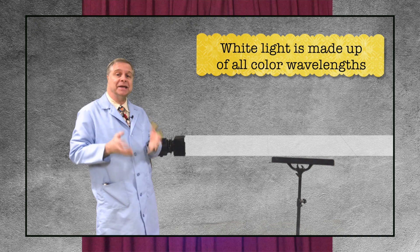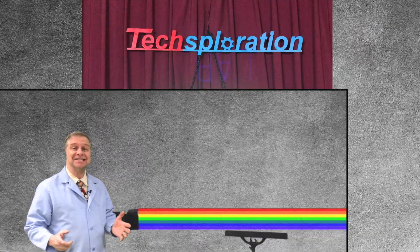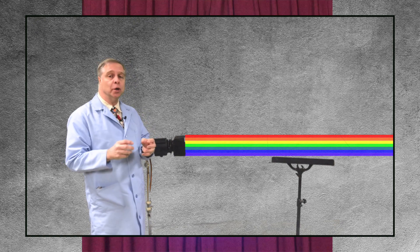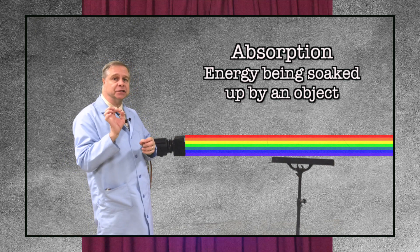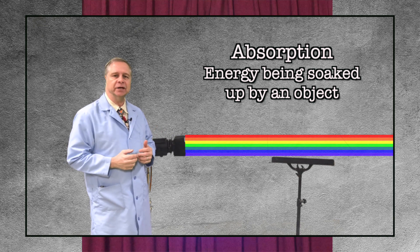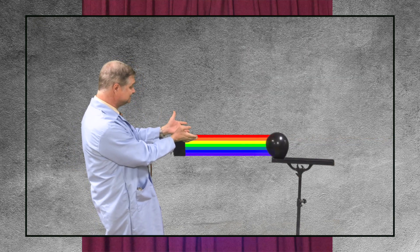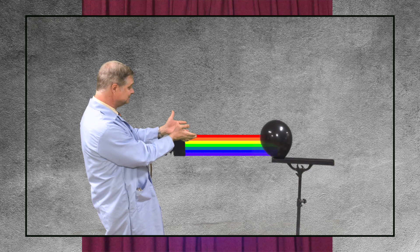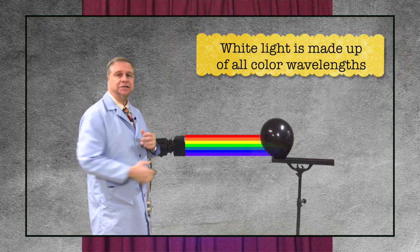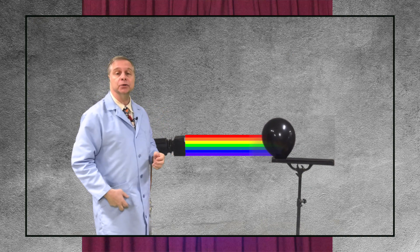White light is made up of all the colors. Let's start with absorption. Absorbed means that energy is being soaked up by an object. So let's say we have something like a black balloon.